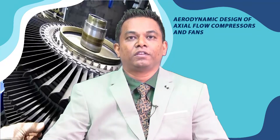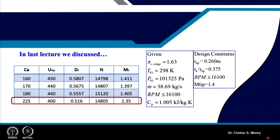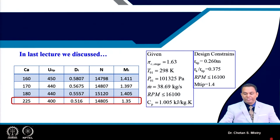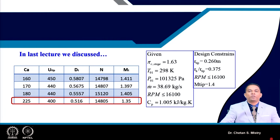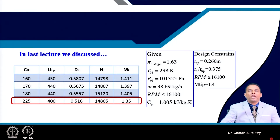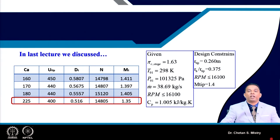Welcome to lecture 57. In the last lecture we were discussing the design of a transonic compressor with an expected pressure ratio of 1.63. We had constraints with tip diameter, hub to tip ratio at entry, and speed limited to 16100 rpm. We started the design with initial assumptions of certain parameters.